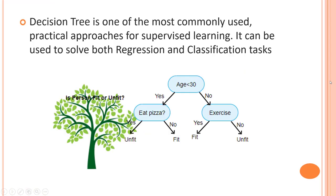Decision tree is one of the most commonly used practical approaches for supervised learning. It can be used for both regression and classification tasks. It is basically based on a flowchart kind of system — decision tree is mostly a decision-making tool that uses a flowchart-like tree structure.